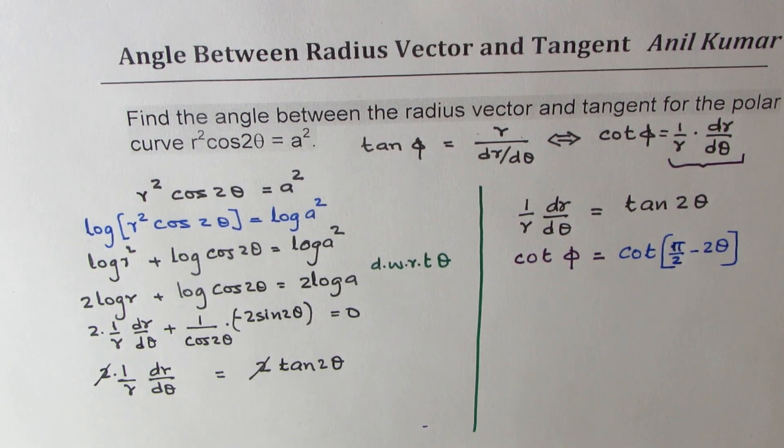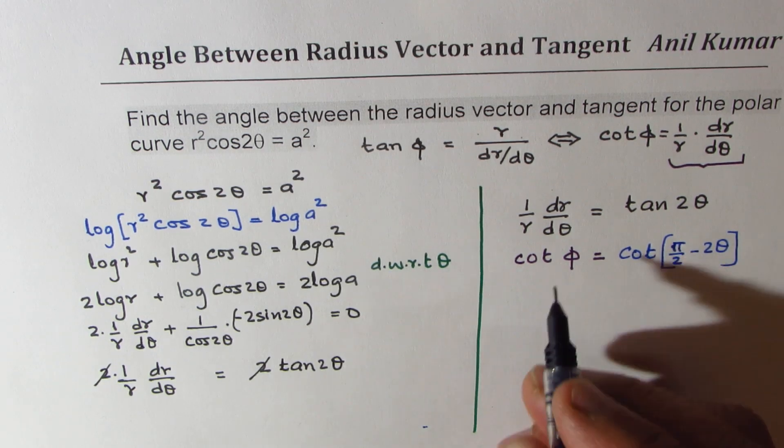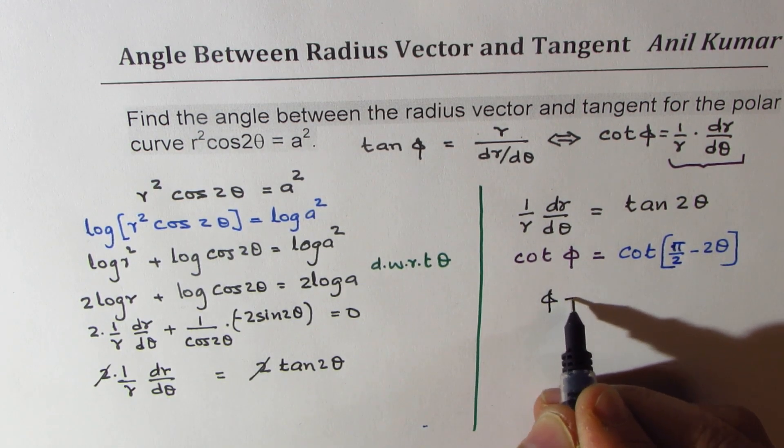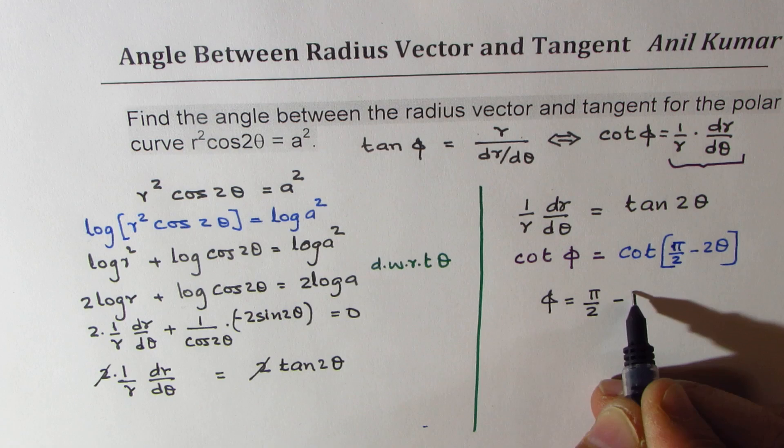That is tan 2θ. Correct. So writing like this gives us a clear answer, which is φ is equal to π/2 - 2θ.